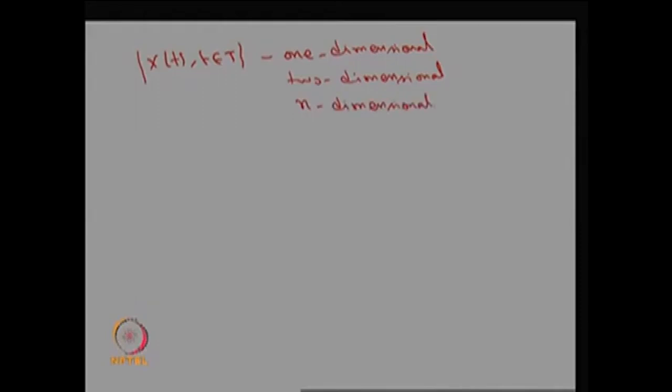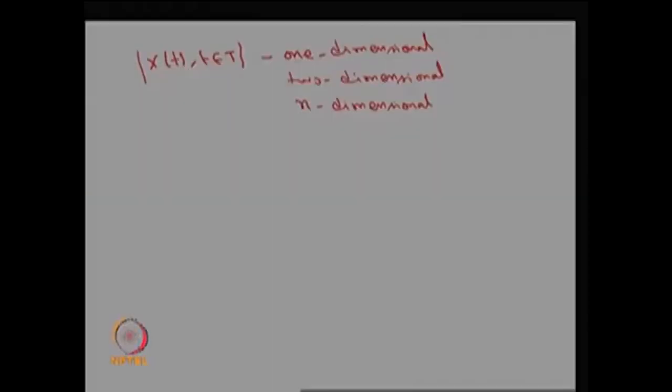We have discussed what a stochastic process is and how to create it, given the parameter space and state space, and the two different approaches to create the stochastic process. Now we are discussing the dimension of the stochastic process — it could be one-dimensional by default, or two-dimensional, or n-dimensional. Let me give a simple example in which it is going to be two-dimensional.